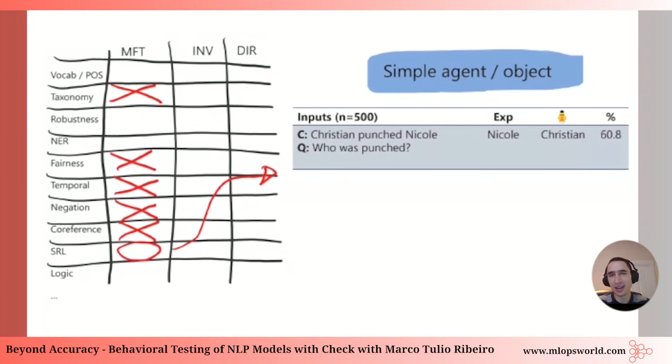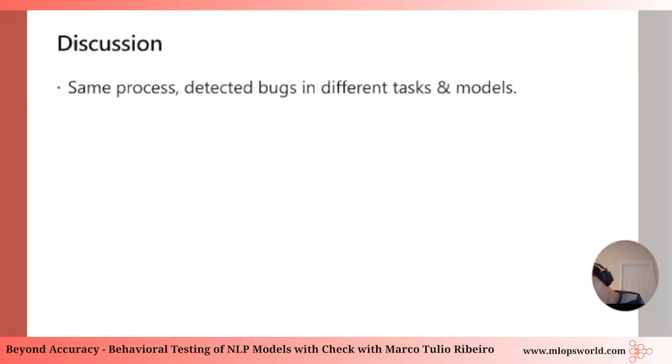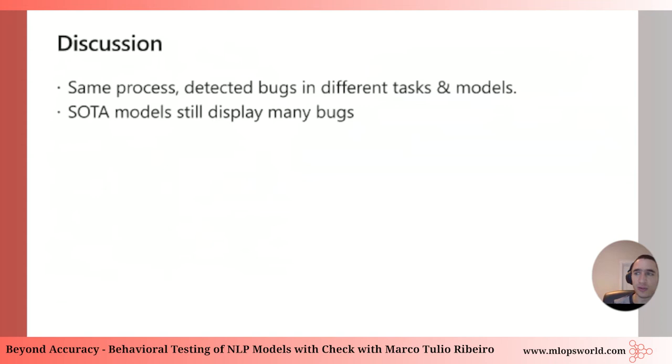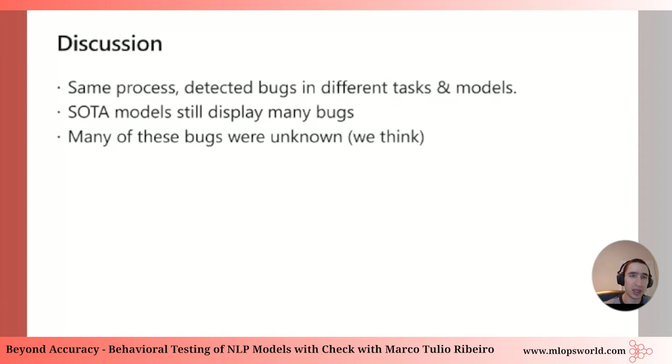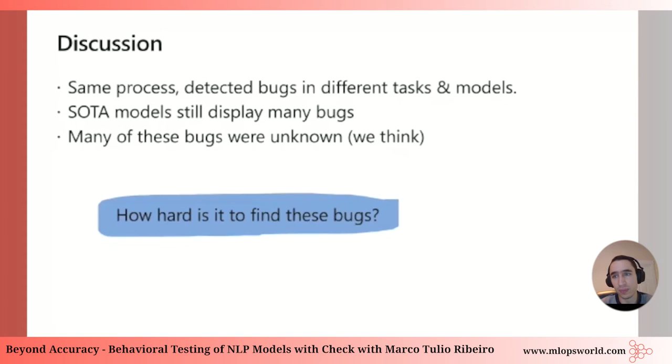The conclusion is that BERT is failing very simple tests — it's clearly not superhuman performance. Using the same matrix process across different tasks reveals very different bugs. If you just relied on accuracy, you'd think these models are almost perfect. But they still display many bugs, and many of these bugs appear to have been unknown before this paper.